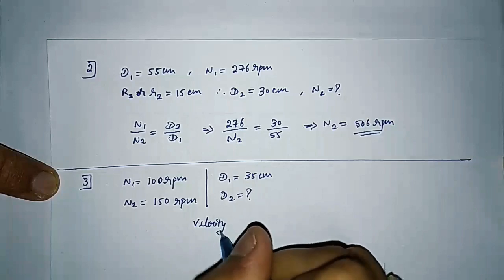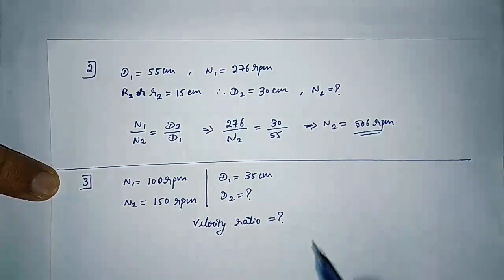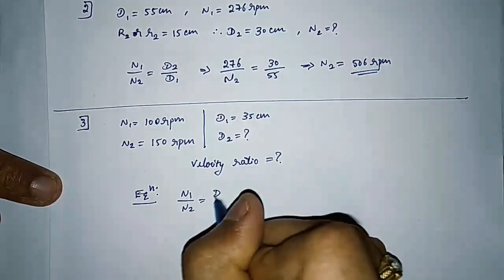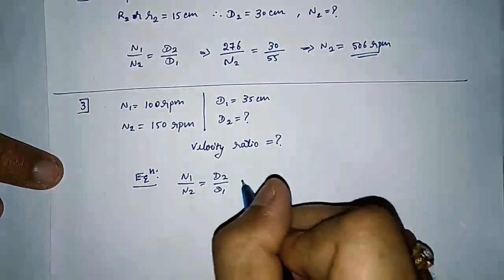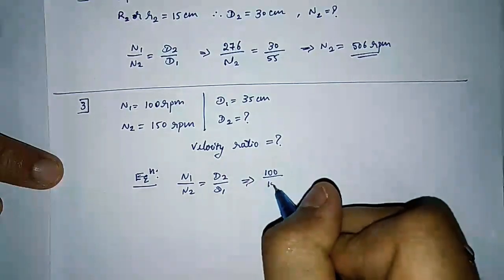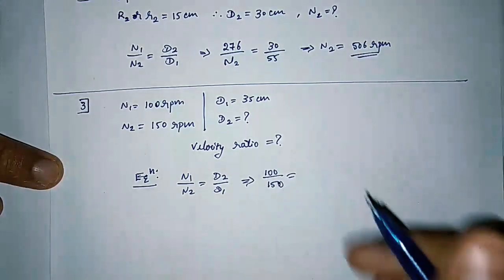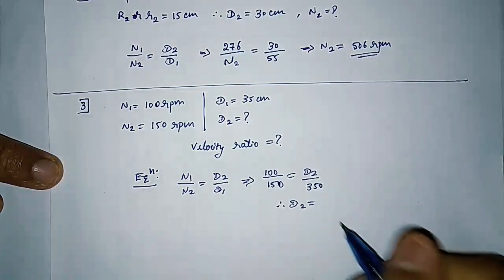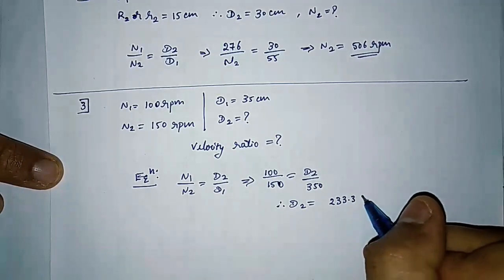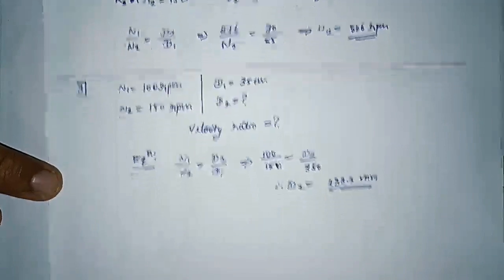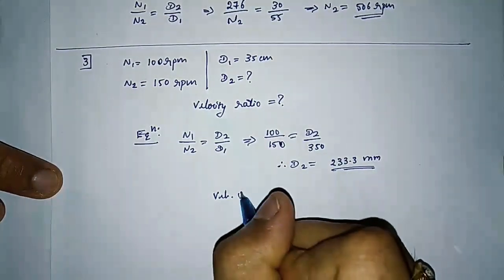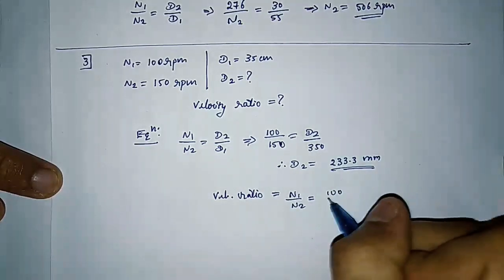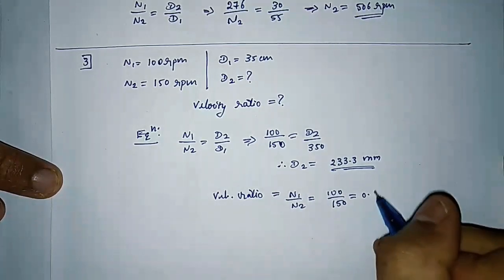We use the equation n1 by n2 is equal to d2 by d1, where n1 is 100 rpm and n2 is 150 rpm, d1 is 350 mm. After calculating we get d2 as 233.3 mm. In order to find out the velocity ratio, the equation is n1 by n2, that is 100 divided by 150 equals 0.66. Velocity ratio value is always less than 1.